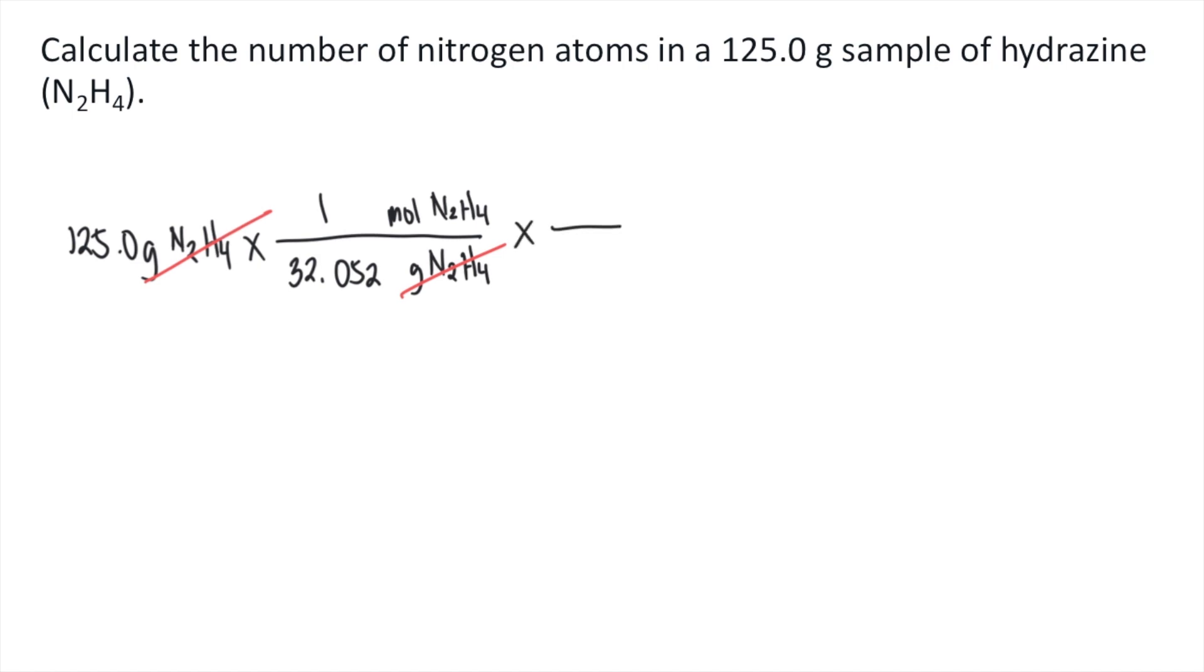Next step, you want to convert the moles of N2H4 to the moles of nitrogen, because the problem is asking specifically for nitrogen. How do we do this? You simply look at the chemical formula of hydrazine, which is N2H4. So for every one mole of N2H4, there are two nitrogens.